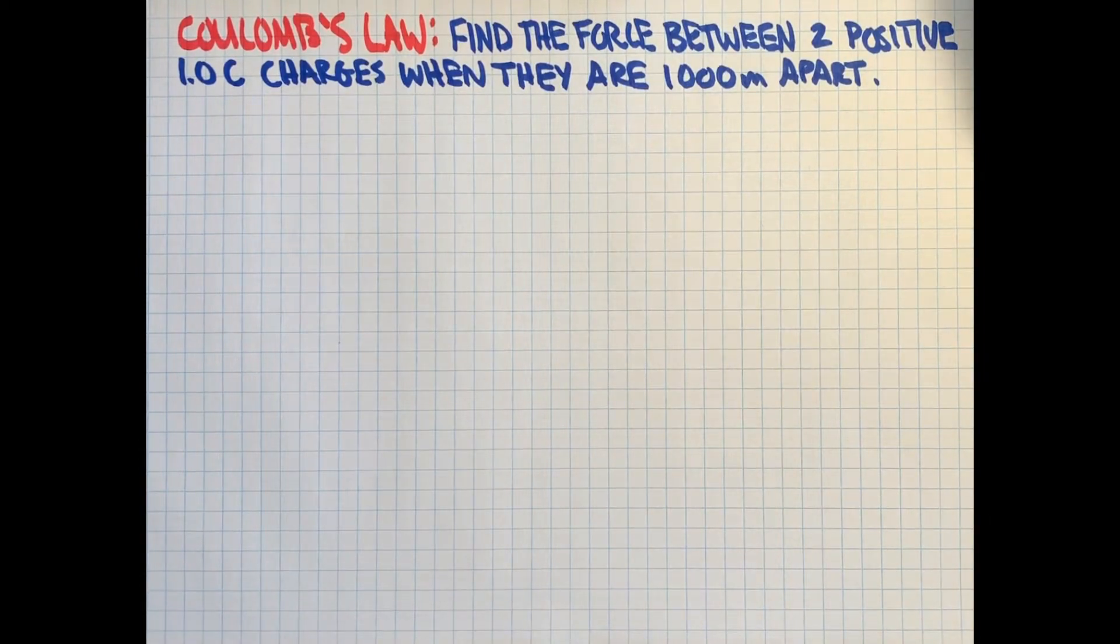This example is really not realistic. I don't know what would be charged positively by one Coulomb, which is quite a bit of charge, and then separated by 1,000 meters, but these are some easy numbers so that we can take a look at how the formula works. So this is a really simple example mathematically.